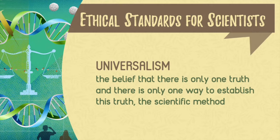The first one is that scientists follow universalism. Universalism is the belief that there is only one truth and there is only one way to establish this truth, and that method is called the scientific method. It doesn't matter if you are a social scientist or a physical scientist, a chemist, a physicist, or a life scientist — we are able to come up with new evidence using that general method, which we discussed in the first module.